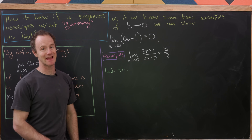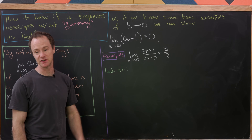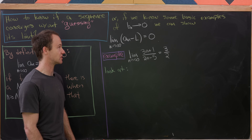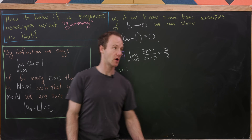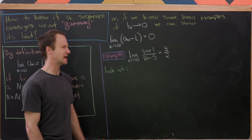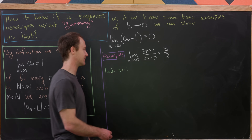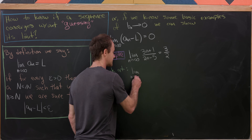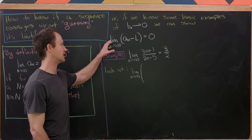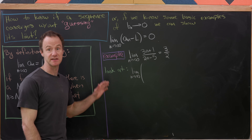Let's say we know some basic examples of sequences that tend towards zero as n tends towards infinity — like 1/n or 1/n². Those clearly go towards zero as n gets larger. Then to show a limit L, all we have to do is show the limit as n goes to infinity of a_n − L equals zero. Of course this would be a theorem you'd have to prove, but armed with some basic zero-sequences you're good to go.